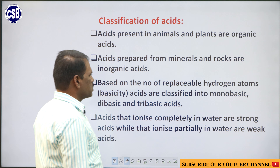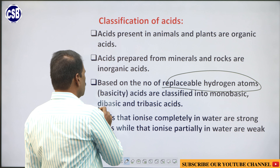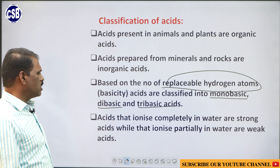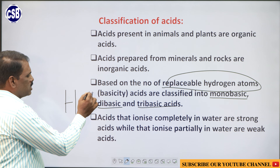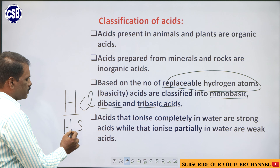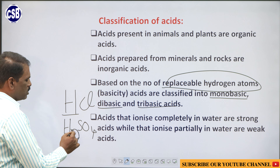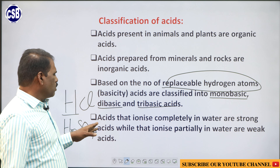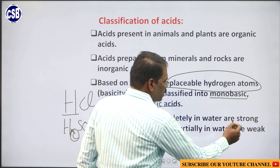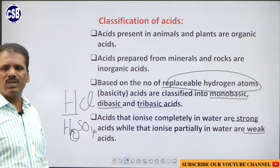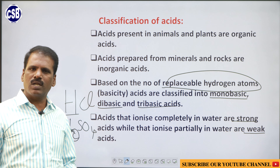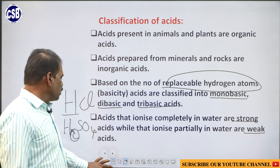First of all, we see some operational definitions of acids and bases. Operational definitions mean we will test the acids or bases using some simple tests — using litmus paper or treating acids or bases with metals. We will come to know whether the given substance is acid or base. The characteristics of acids: acids are sour in taste, they turn blue litmus into red, react with active metals to give out hydrogen gas, combine with carbonate and metal hydrogen carbonate to liberate carbon dioxide, and react with bases and metallic oxides to give out salts. When an acid reacts with a base, it gives out salt and water. Aqueous solutions of acids will conduct electricity.